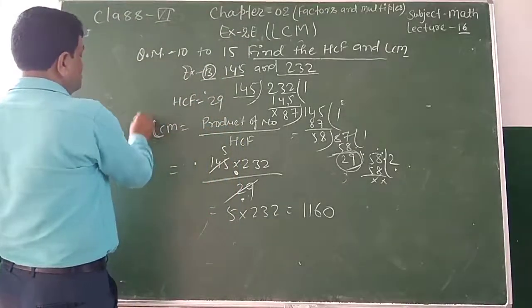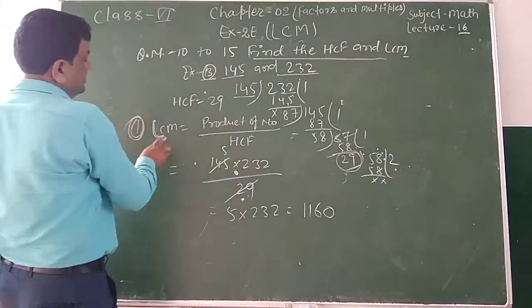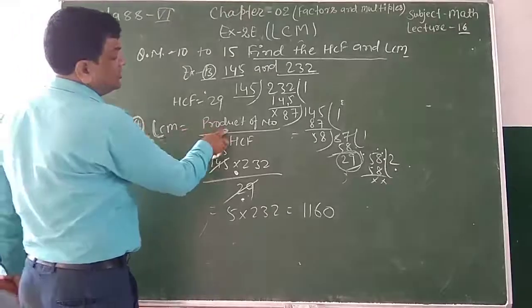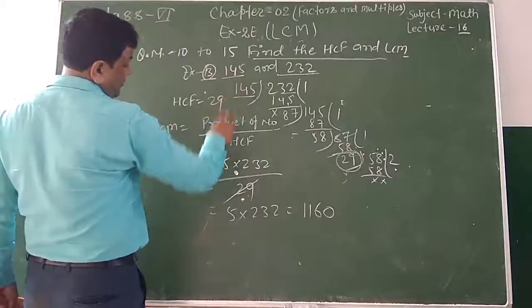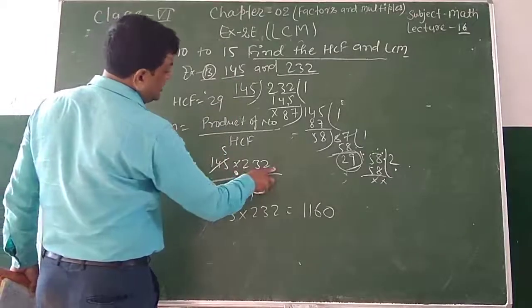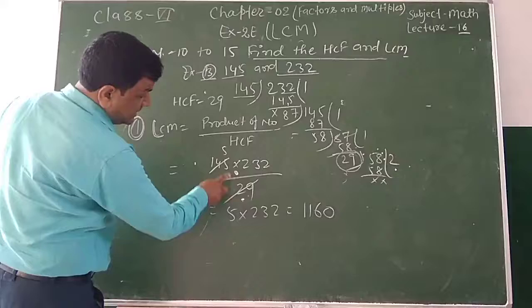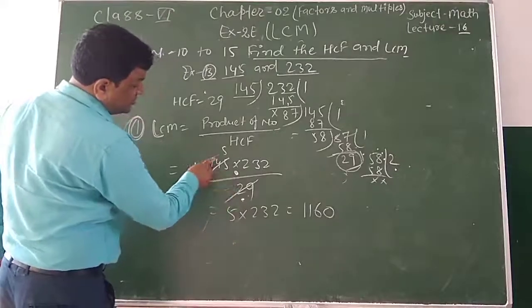Now, in this example, I told you the rules. If you have HCF, you can divide the numbers by HCF. What are the numbers? 145 and 232 divided by 29. If you do this, you can do this.